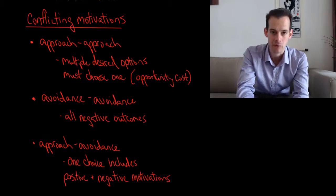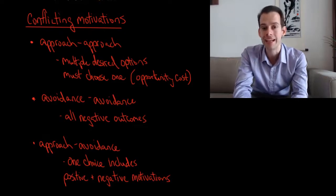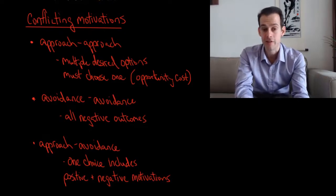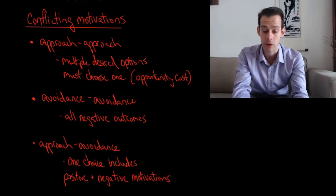I can clean the bathroom, which I don't want to do. I can wash the dishes. I don't want to do any of these things, but I have to do something. They're all negative outcomes, and so I have this avoidance-avoidance conflict in trying to choose which one.